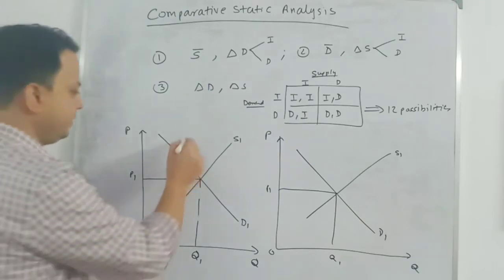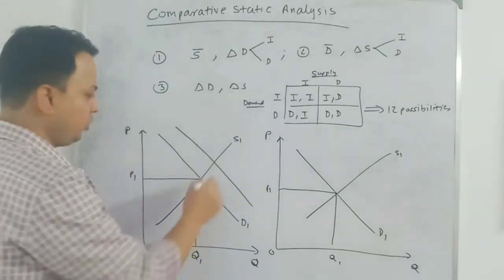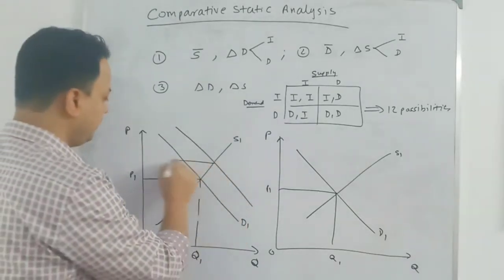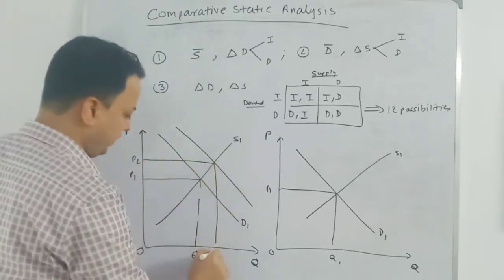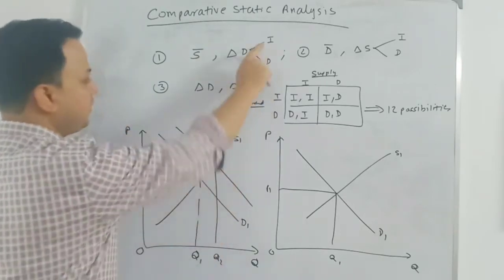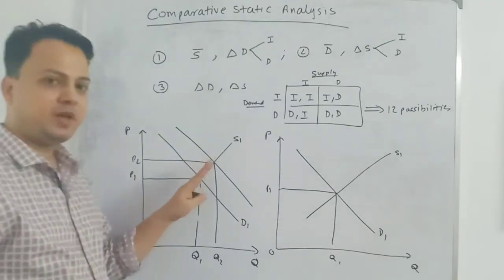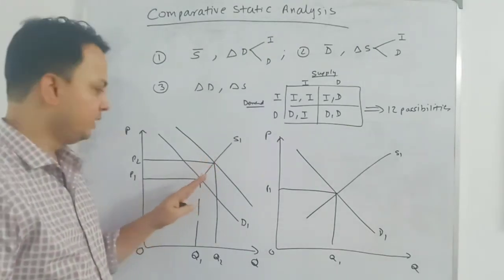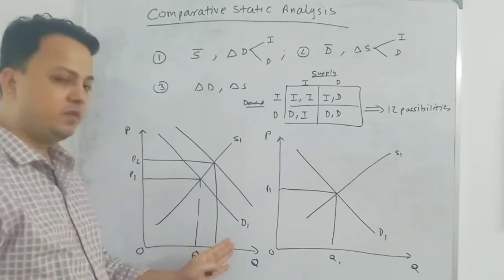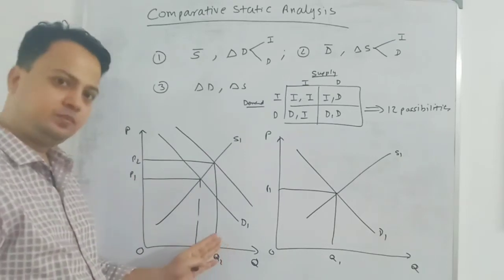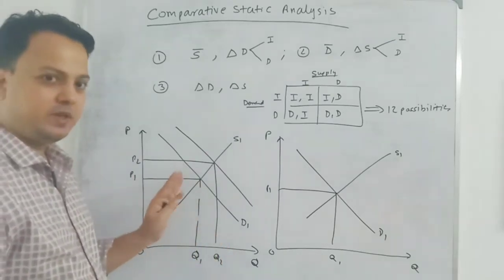The new equilibrium will be on my new demand curve. The supply curve gives me the point where demand and supply interact, giving me the equilibrium price and quantity. When demand is decreasing, at the new equilibrium quantity will be lower and price will be lower.